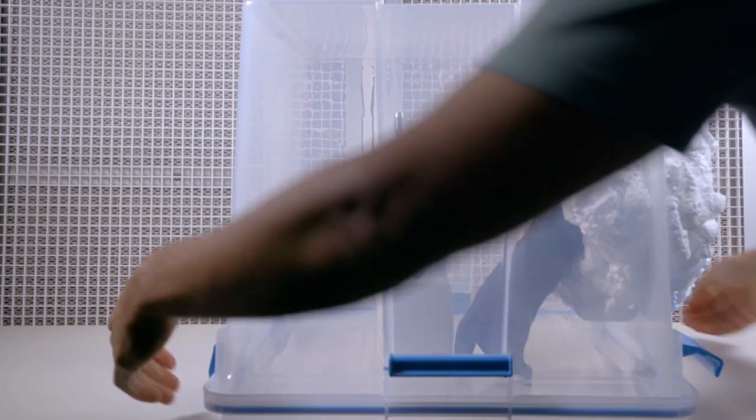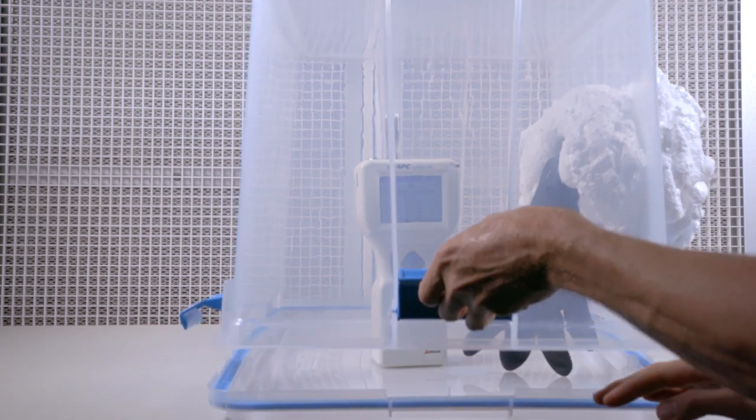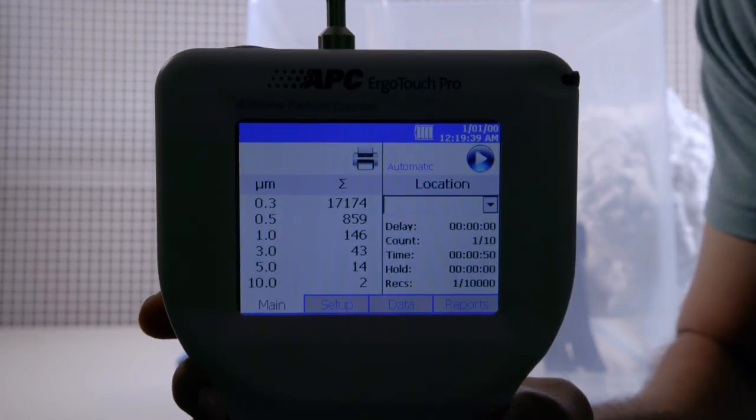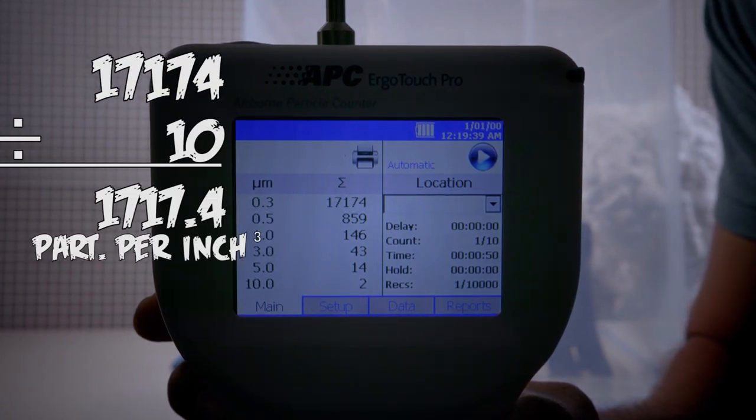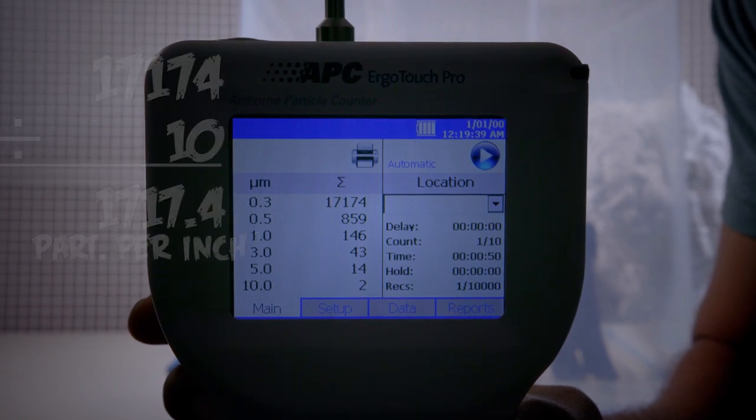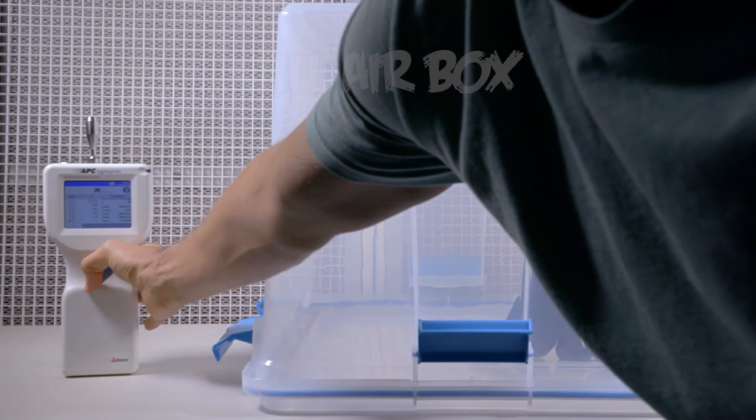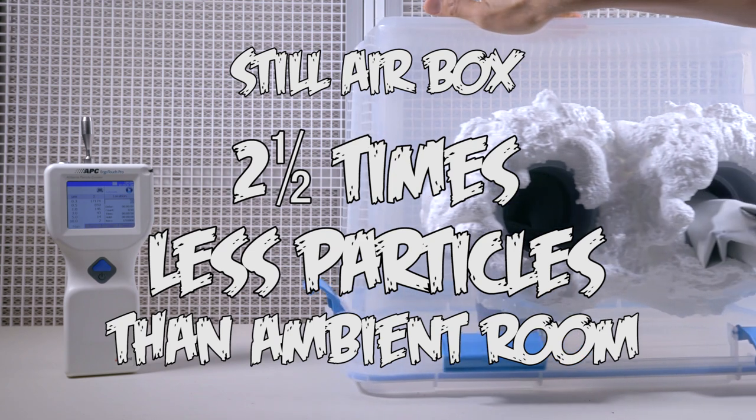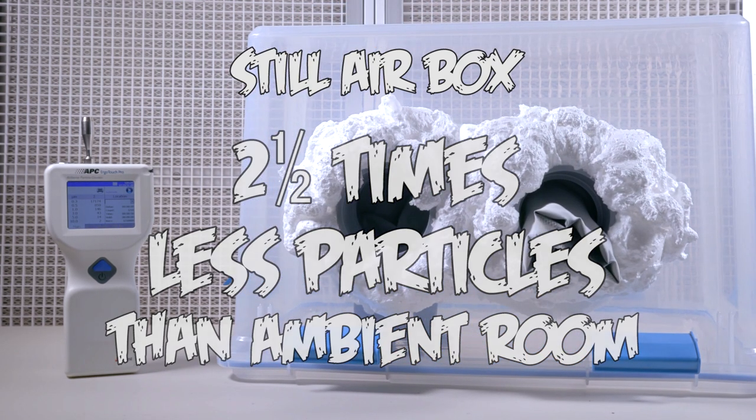Now, we'll open up our still air box to see our findings. We divide by 10 to get our cubic inch reading, and these are our results. We have 1,717 particles per cubic inch, in particles that are 0.3 microns in size. So, in layman's terms, our counter has calculated 2.5 times less particles in our still air box when compared to our ambient room reading.